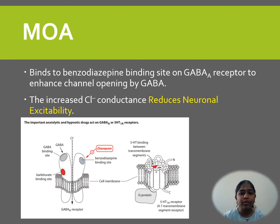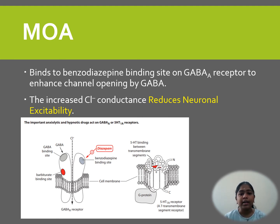Mechanism of action of diazepam: Diazepam binds to the benzodiazepine binding site on the GABA-A receptor to enhance the channel opening by GABA — gamma-aminobutyric acid. The increased chloride conductance reduces neuronal excitability.